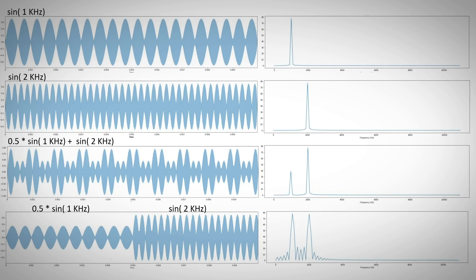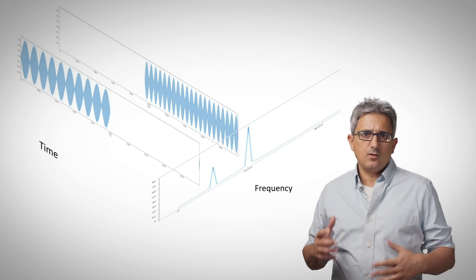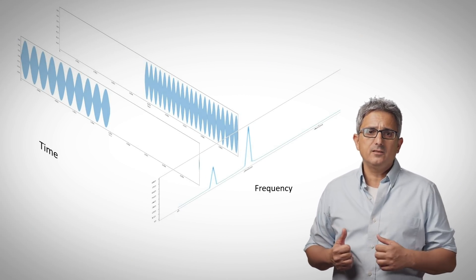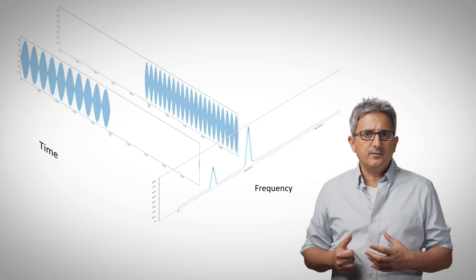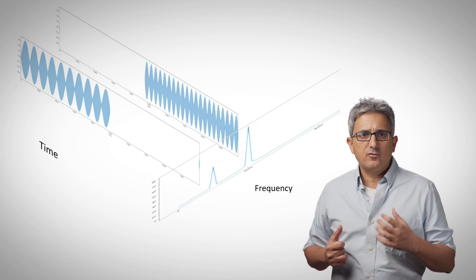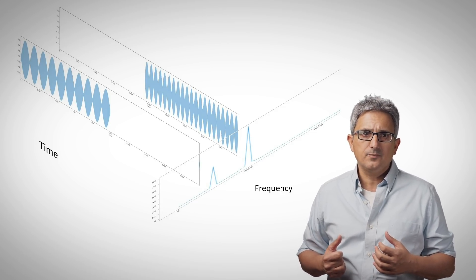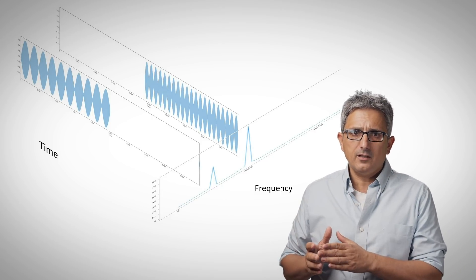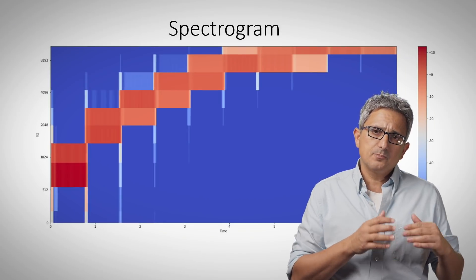So there are advantages in analyzing the signal at the time domain, and advantages to the frequency domain. What I need is a representation that combines both the time and frequency information, and we can get it using short time Fourier transform. If we apply several FFTs at different time intervals, the result will be a spectrogram.